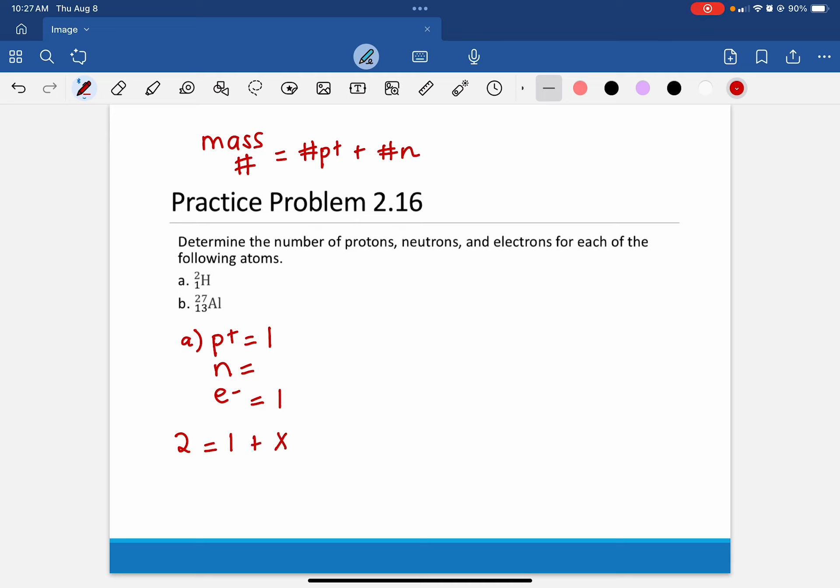We have to move some things around. This is going to move to the other side. When it does, it cancels, and we do the opposite. So 2 minus 1 equals x, where 2 minus 1 is 1. So 1 proton, 1 neutron, and 1 electron.